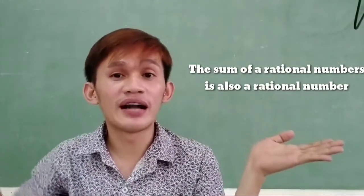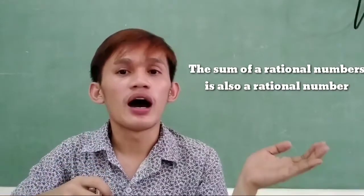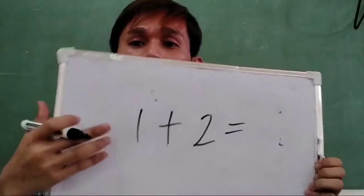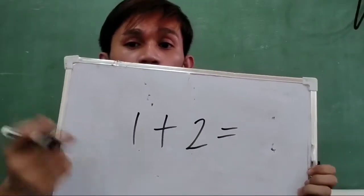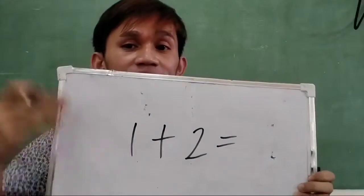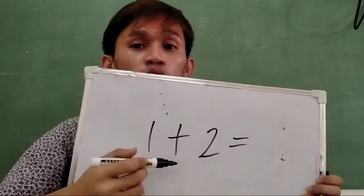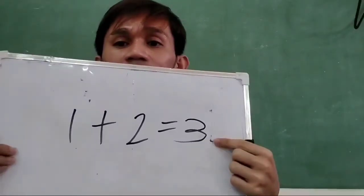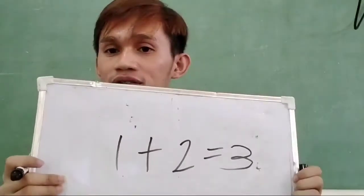So in this property, it states that the sum of rational numbers is also a rational number. So like for example, we have the given rational numbers such that 1 plus 2. So the sum of these two rational numbers will also be a rational number. Let us see if that is really true. 1 plus 2, which are both rational numbers, and if you are going to add them, the sum will be 3. And 3 is also a rational number.